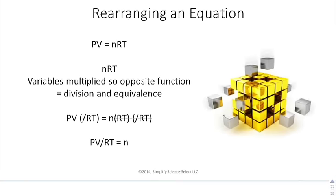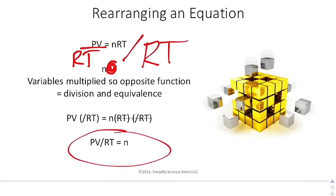The first thing that I need to do is I need to isolate it. The variables NRT are multiplied, so the opposite function would be division. So what I want to do is, in order to get N by itself, I have to divide both sides by RT. When I divide both sides by RT, I divide by RT to isolate the N, but then I need to do it to both sides to maintain equivalence. And when I do that, I get N equals PV divided by RT.